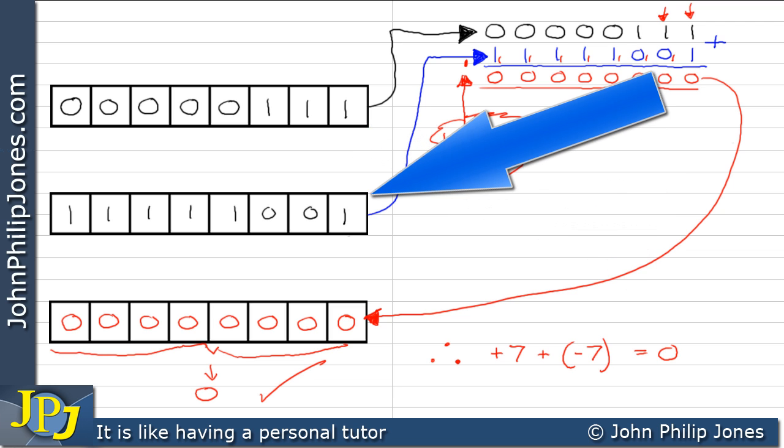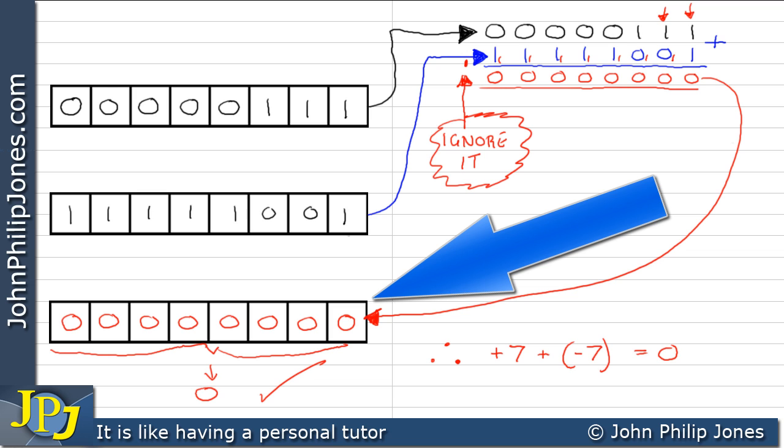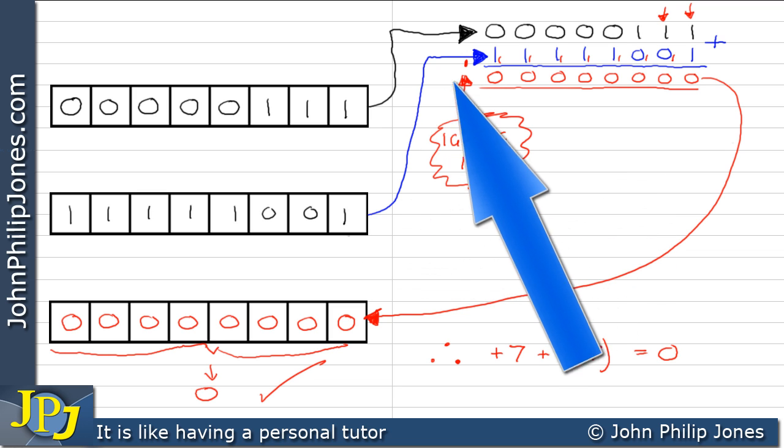So here we started off with plus 7, took the 2's complement, and we got negative 7. We then added them together to give us 0. And of course, it's 0 because we ignored the carry into the ninth bit.